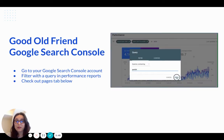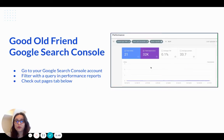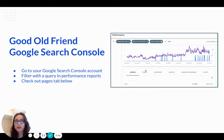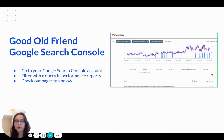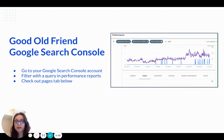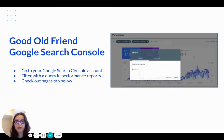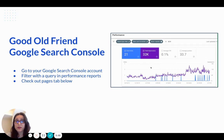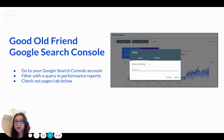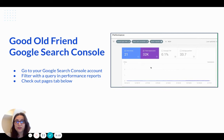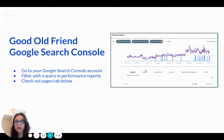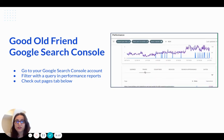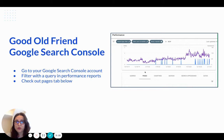You can also get help from our good old friend Google Search Console. The only thing you need to do is go to your Google Search Console account, filter with a query in the performance report, and check out the pages tab below. Here you can find the specific pages getting impressions for that specific keyword. You can also use this filtering mechanism for URLs including a specific keyword, but for comparing queries it's an even better option.